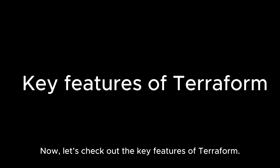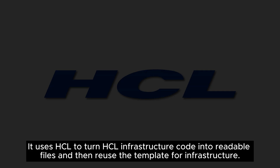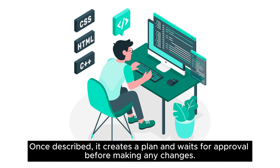Now let's check out the key features of Terraform. Multiple Cloud Provider: This allows easy switching between cloud providers — AWS to GCP — without vendor lock-in. Infrastructure as Code: It uses HCL to turn infrastructure into readable configuration files that can be reused as templates. Execute: Once described, it creates a plan and waits for approval before making any changes.